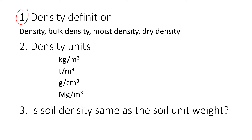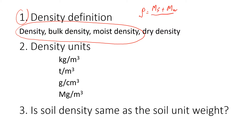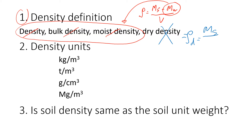So we'll start with the first one: the definition of density. Sometimes students get confused and ask what is density, what is bulk density or moist density. Typically it's the same thing — we use it to show that there is also water in the soil. The definition of density is mass of solids plus mass of water, divided by total volume of soil. So density, bulk density, and moist density all include mass of water. But dry density is different — when we talk about dry density, we don't consider mass of water because the soil is dry. So we have mass of solids divided by total volume of soil. That's the difference.